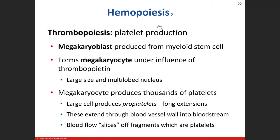Thrombopoiesis — a thrombocyte is another name for our platelets. We start with the myeloid stem cell, which produces this huge cell called a megakaryocyte. Chemical messengers work on this megakaryocyte, which migrates to a blood vessel and grows extensions. These extensions expand through the blood vessel wall into the lumen of the blood vessel, and as they do, parts break off — and those pieces are platelets.